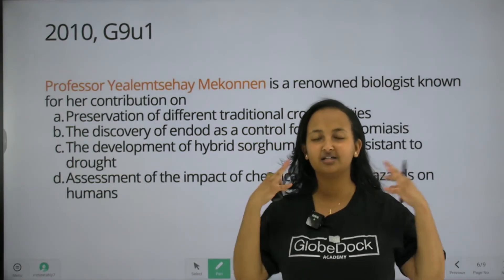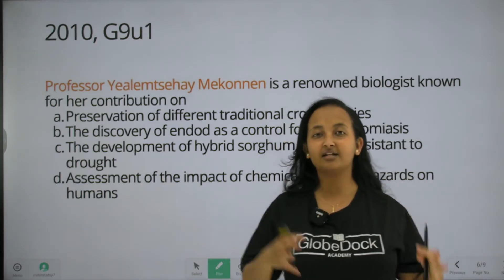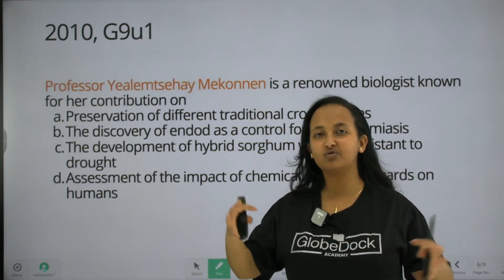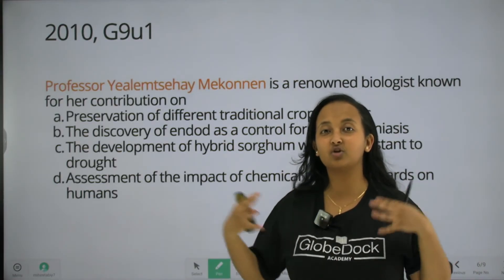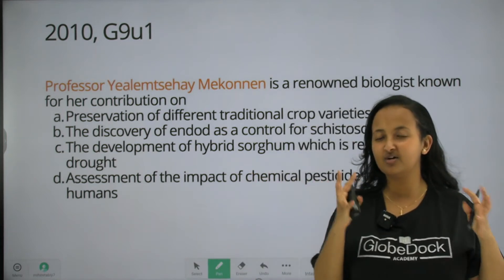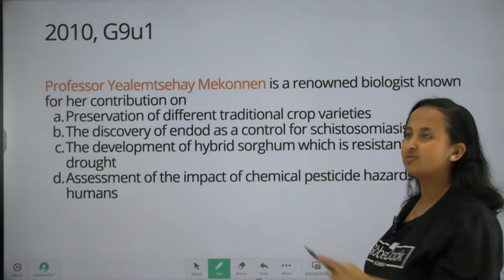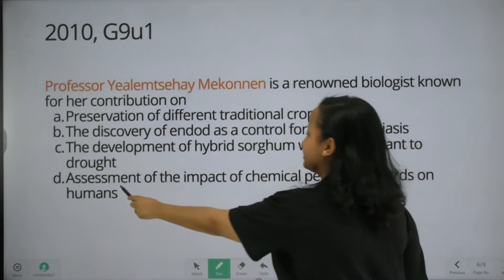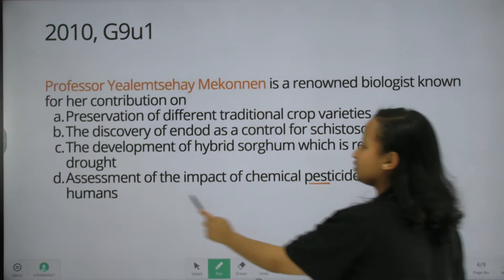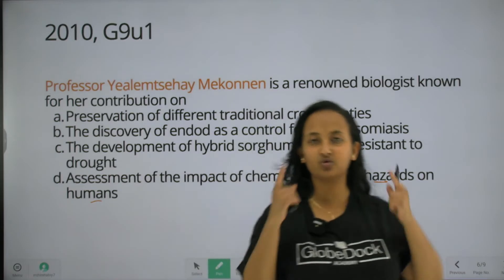They are not used to have a pest attack. The image is used to have a pest; the professor is using it. It is used to control pests. Assessment of the impact of chemical pesticides: hazards on humans. Pesticides are used and have effects on humans.